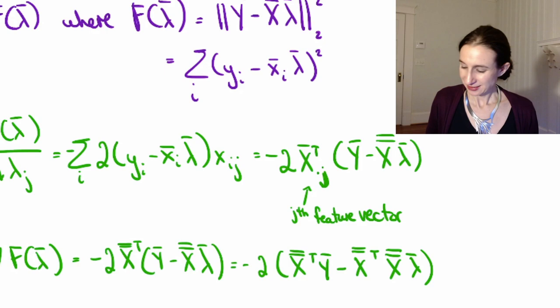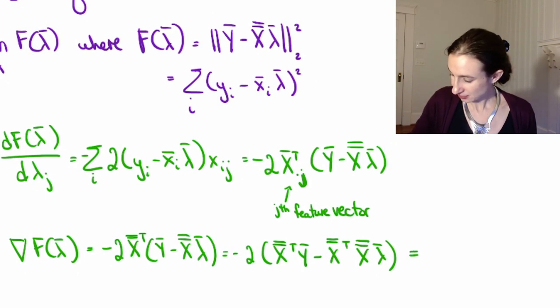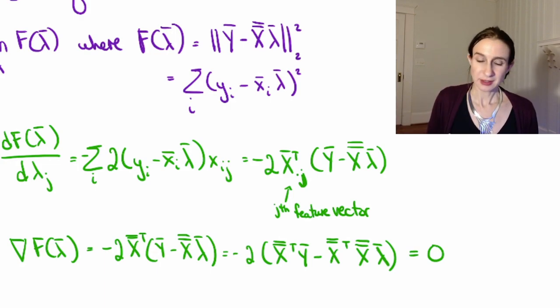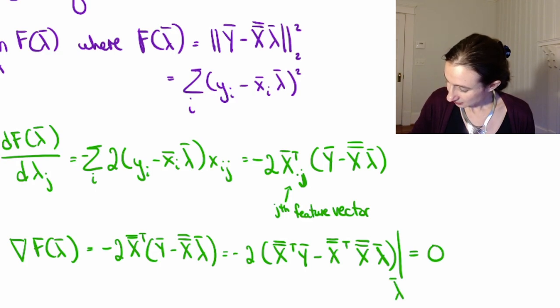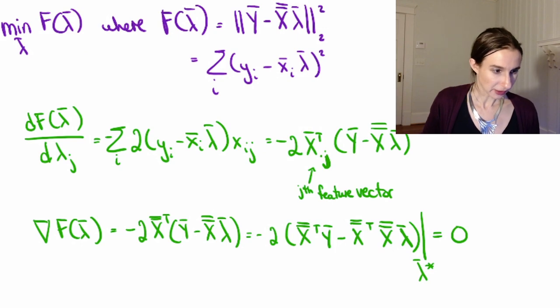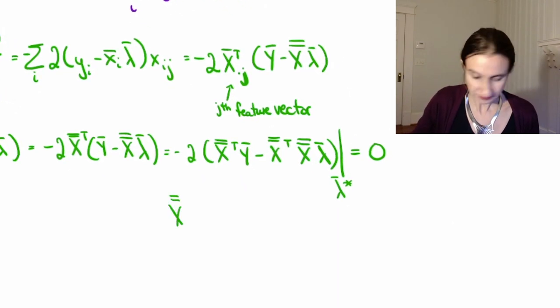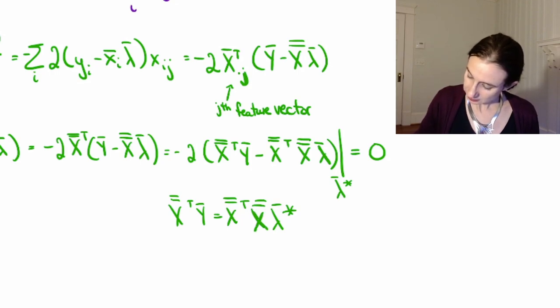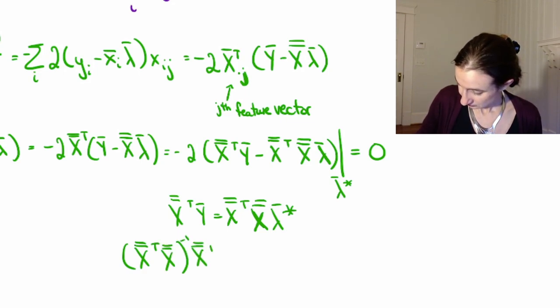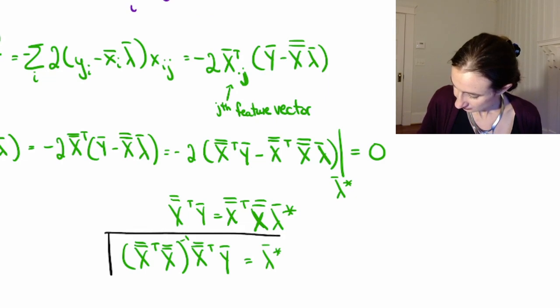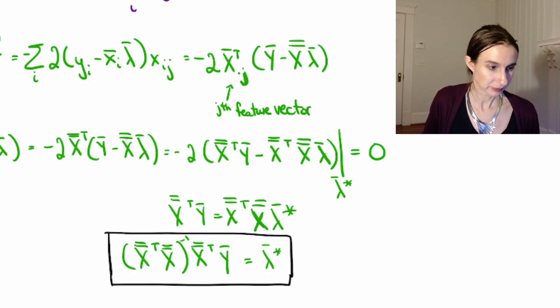Cool. And now, again, since I'm minimizing, I want to set that gradient equal to 0. And at 0, the solution is going to be called lambda star. Lambda star is the solution there. All right. So now I can actually just write down what lambda star is. And then inverting that big matrix there. And there we go.